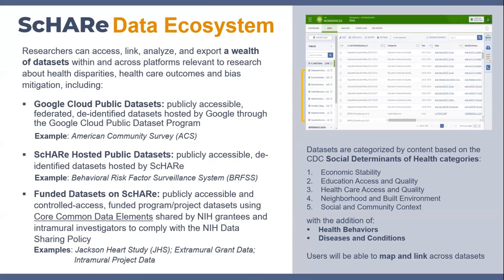We're creating a data ecosystem of not only federated public data sets that are already on the cloud, like the American Community Survey, but we also have what we call SHARE-hosted data sets, meaning we pay for the hosting of the data set, and we're doing this so you do not have this expense. The SHARE platform takes that expense off of you. An example of a SHARE-hosted national data set is BRFSS, the Behavioral Risk Factor Survey. And then of course we're going to be adding projects, grants, and contracts data to the website this year.